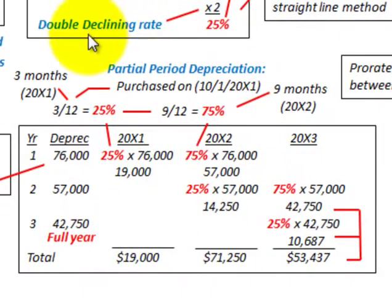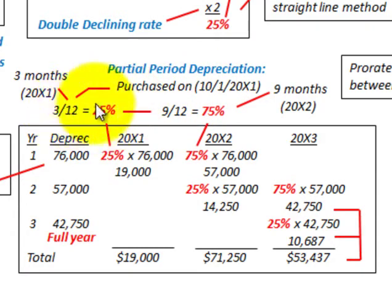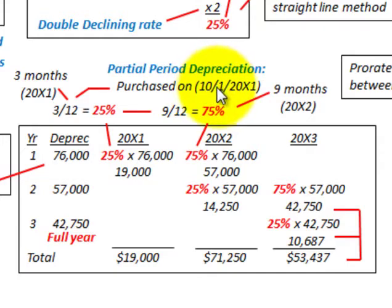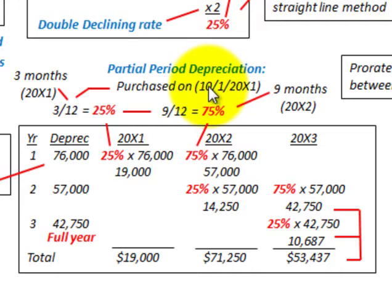Now let's look at the second step: partial period depreciation. Remember, we purchased this equipment on October 1, 20x1, so we have to account for depreciation across partial periods. Since we're using the declining balance method and our fiscal year runs from January through December, this equipment's depreciation runs from October 1, 20x1 through October 1, 20x2, and so on — which is why we call it partial period depreciation. We have to prorate the depreciation expense between periods.